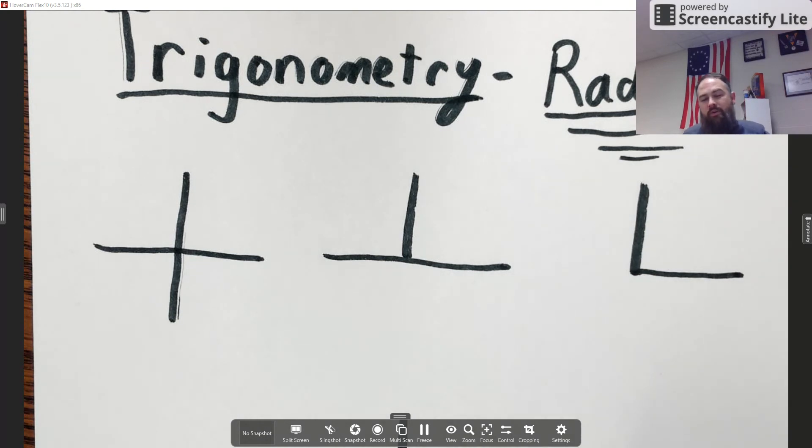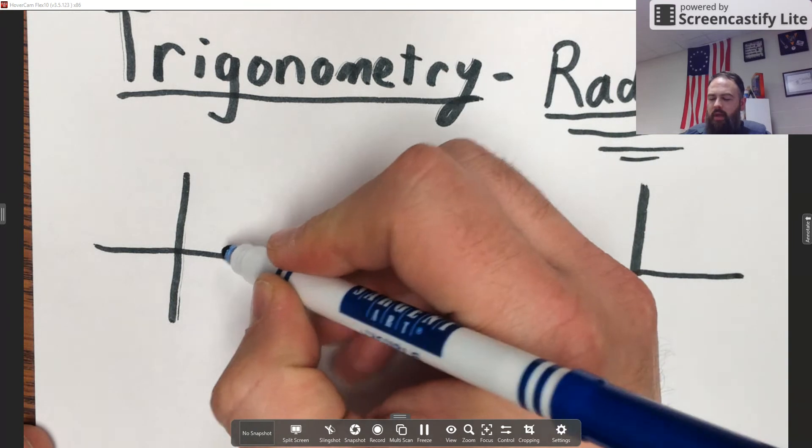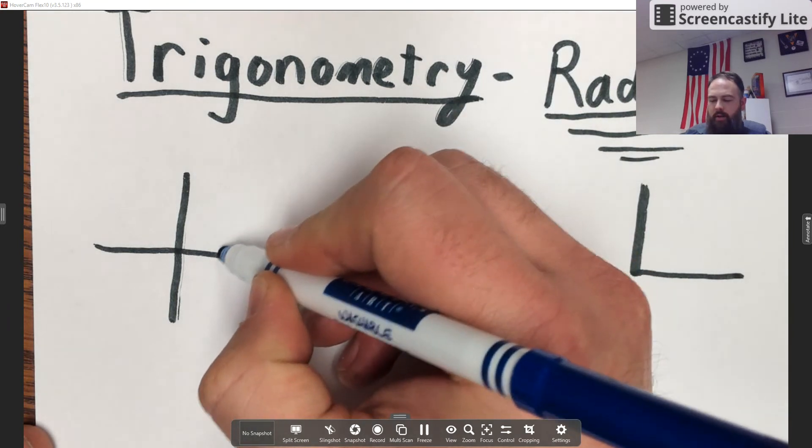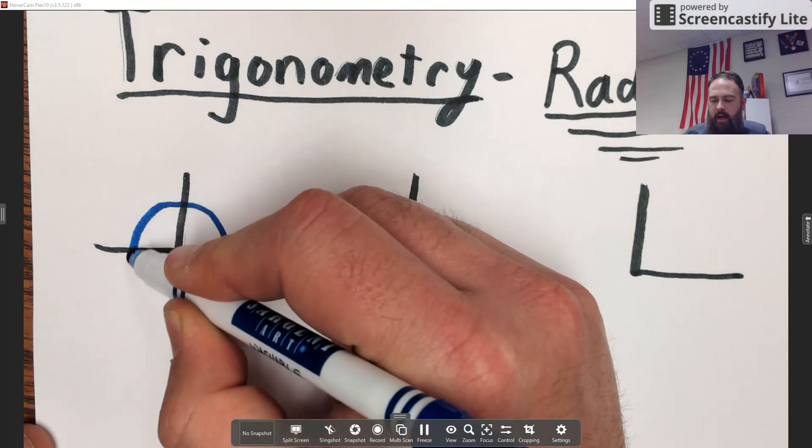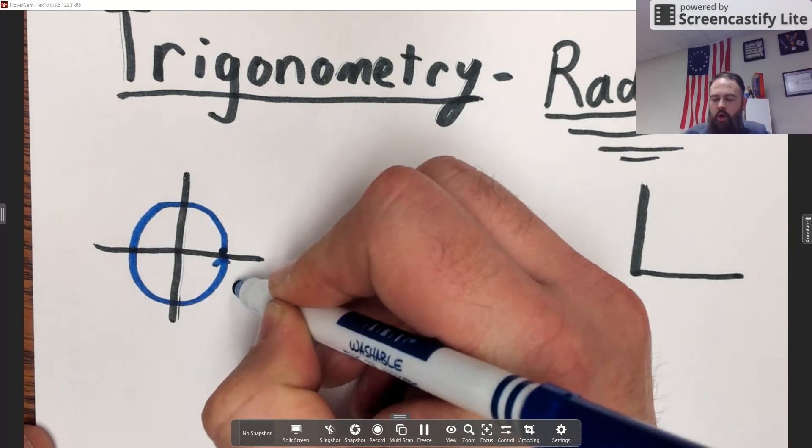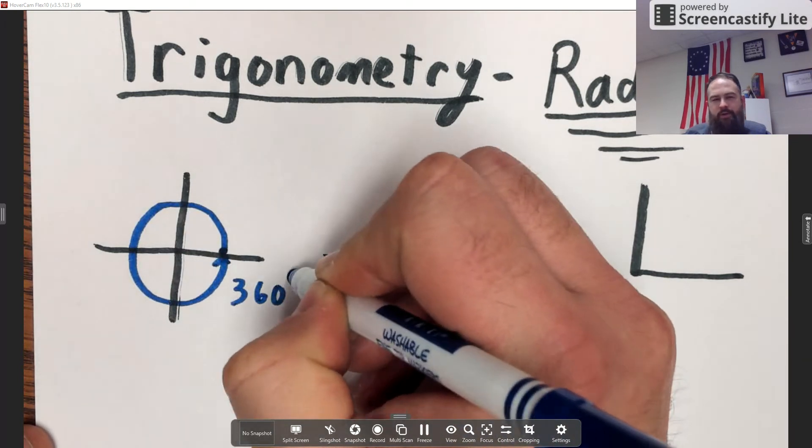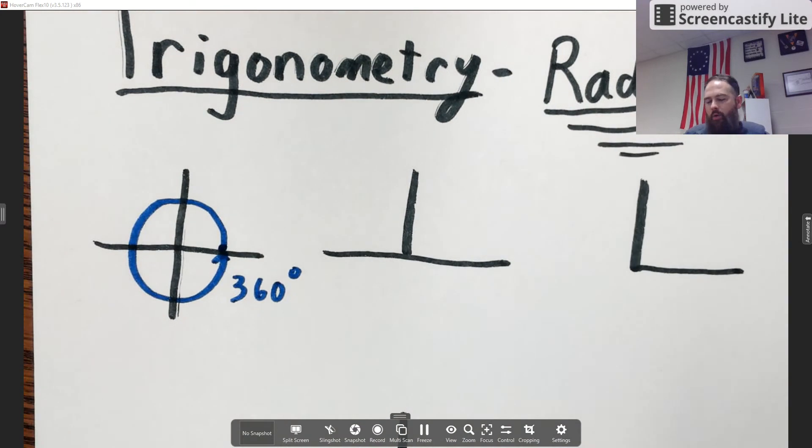Before we can talk about radians, let's first talk about degrees. A degree is a unit of measure on how big an angle is. The way we look at it is if we were to start at one spot and rotate entirely around a circle, we would say that that is 360 degrees.